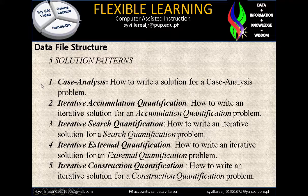The first is case analysis — it identifies how to write a solution for a case analysis problem. Number two is iterative accumulation quantification, identifying how to write an iterative solution for an accumulation quantification problem. Number three is iterative search quantification — how to write an iterative solution for a search quantification problem. Number four, we have iterative extremal quantification. Extremal is something like construction — whether it is right or wrong, that is extremal.